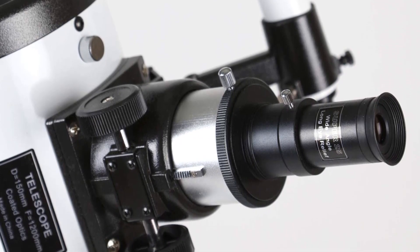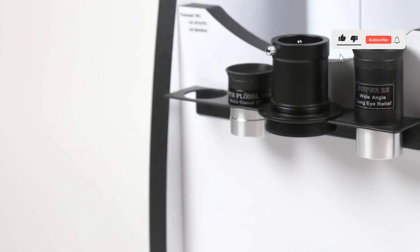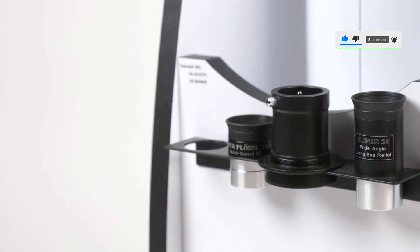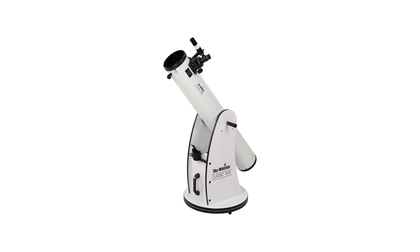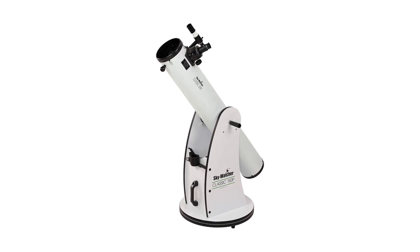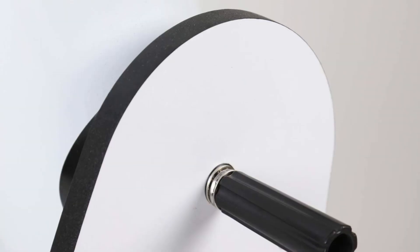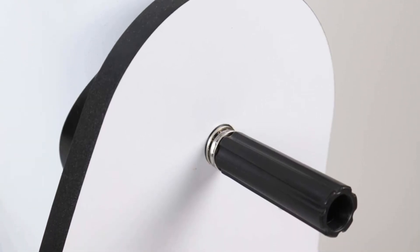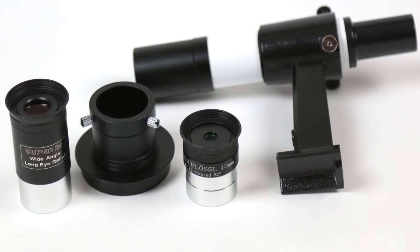This telescope also uses a 6x30 straight-view finder scope, a tension control handle, and a floor-based manual Alt-AZ mount. This is a great telescope to have as you utilize its dual-axis Teflon bearings and its altitude tension clutch. Not only does it look good, it also performs well with the large light bucket that offers a great look in accordance with performance.